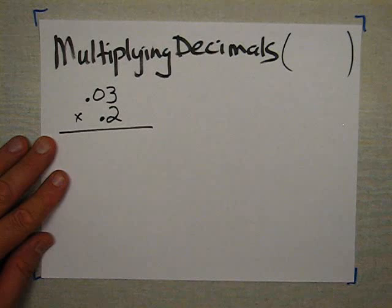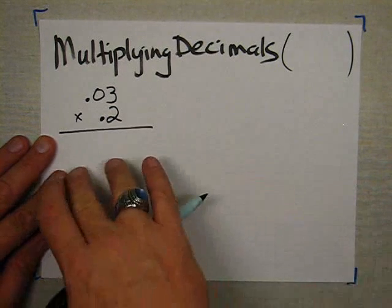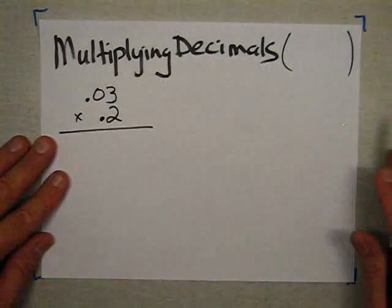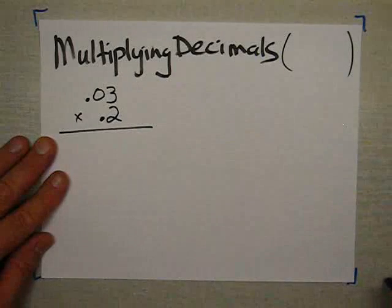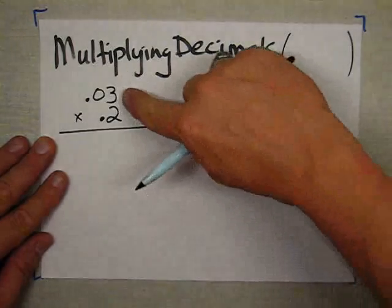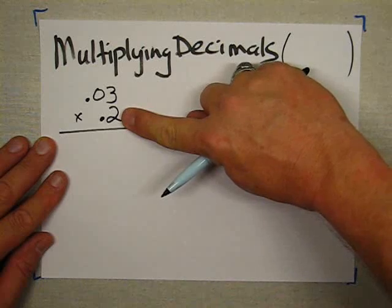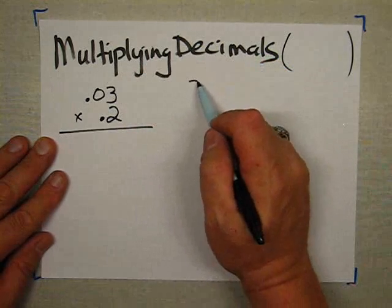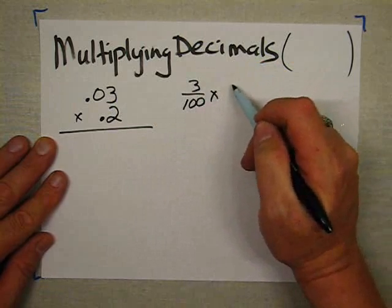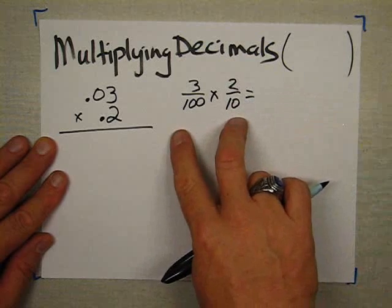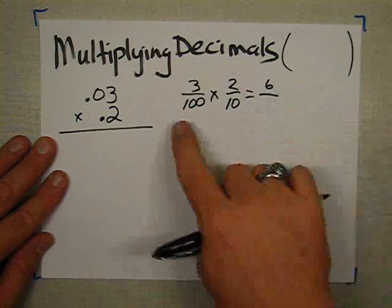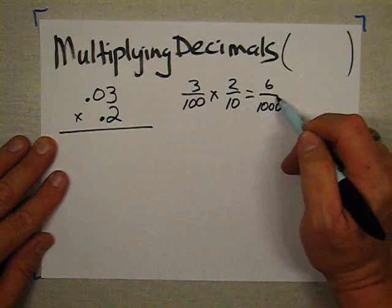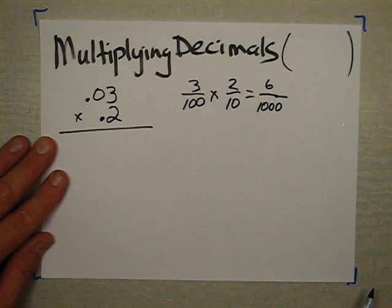We're going to multiply decimals basically the same way that we multiply whole numbers. But before we work this problem and get its decimal answer, I want to work this very same problem using fractions instead. Decimals and fractions are really the same thing — just a different way of writing the same thing. So: 3 hundredths times 2 tenths as fractions. 3 times 2 is 6, and 100 times 10 is 1,000. So the answer has to be 6 thousandths.